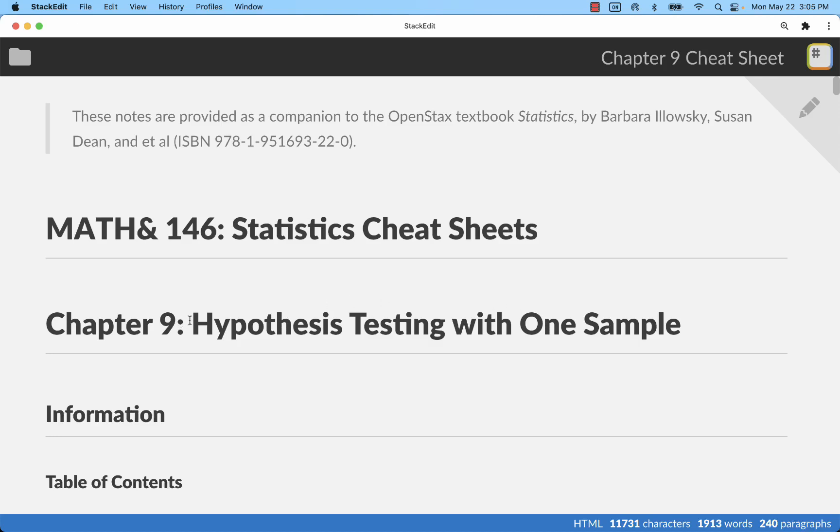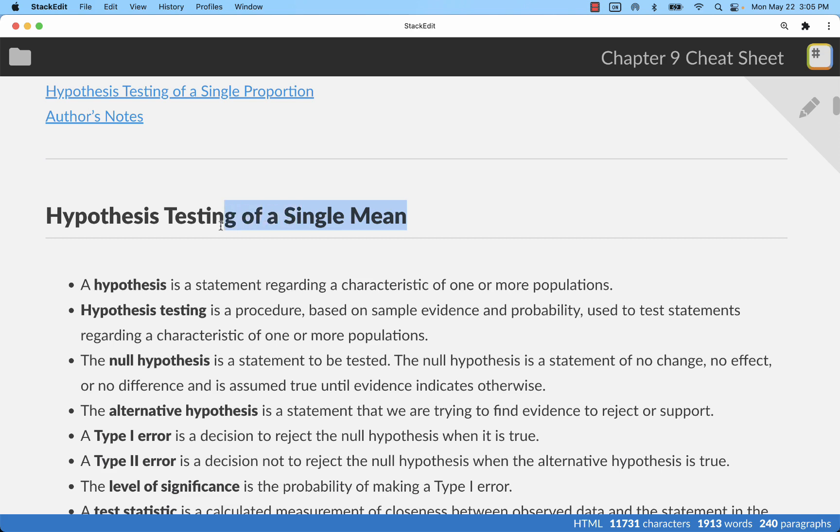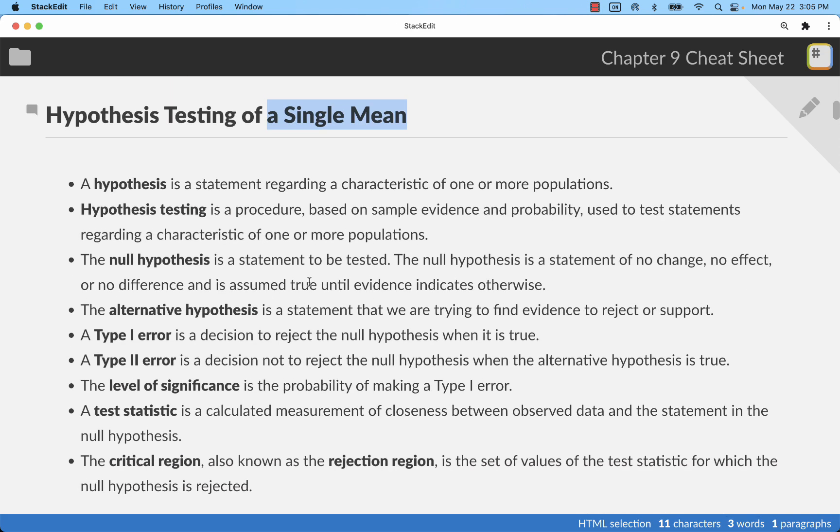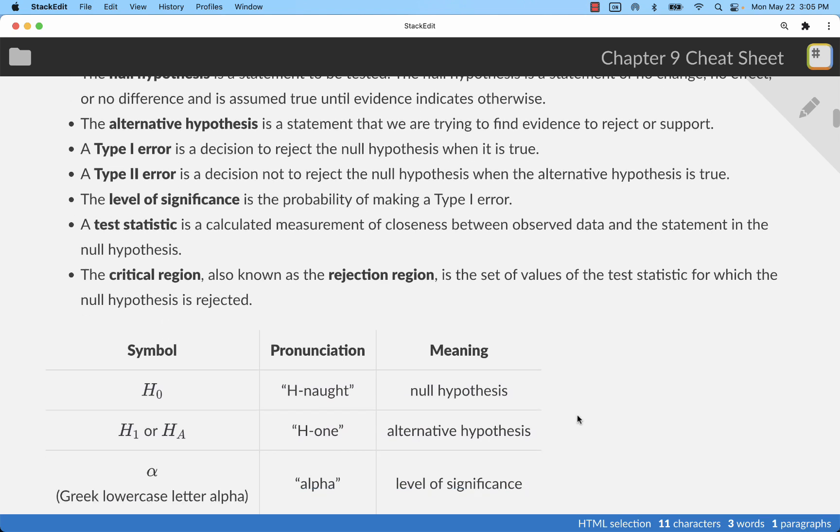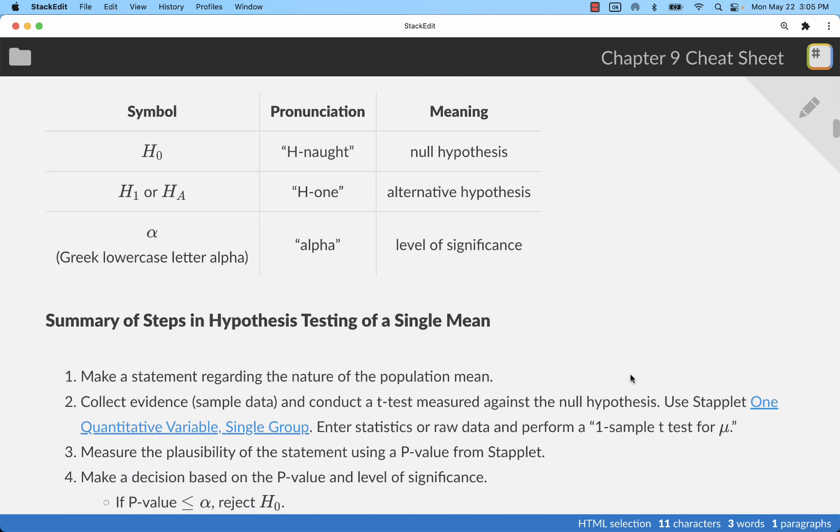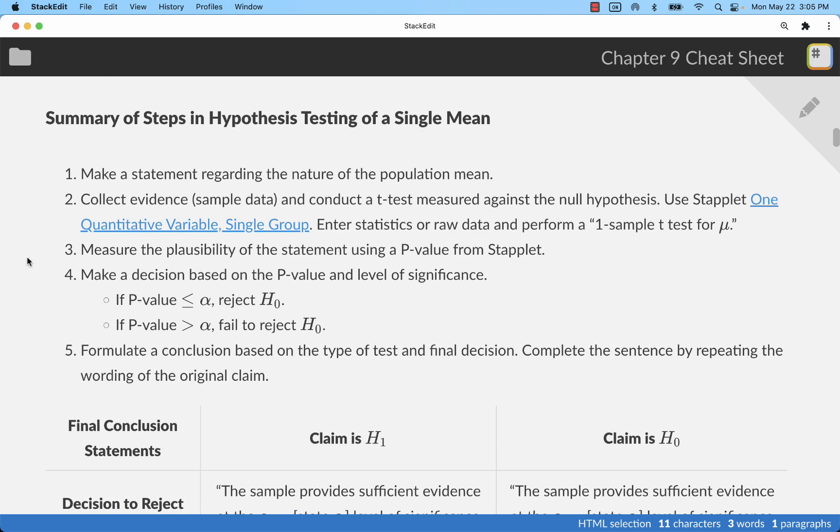We're going to take a first look at hypothesis testing with one sample, specifically testing a single mean. There are a lot of terms and concepts going on. I encourage you to look at the notes and the videos in the notes to get a fuller understanding of this process. Here we're going to just go through things pretty quick and go with the simplest way to do these five steps.